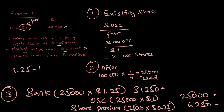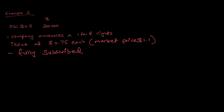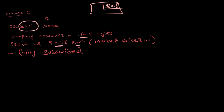Let's do another rights issue example where the par value of the share is different. The company has issued ordinary share capital of $200,000, and this time the par value is $0.50 per share. The company announces a one-for-eight rights issue at $0.75 each. One-for-eight means if you have eight shares you can buy one new share. The market price was $1.10, and the issue was fully subscribed.